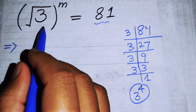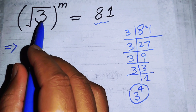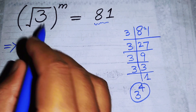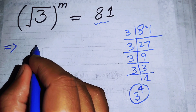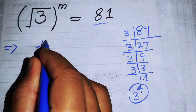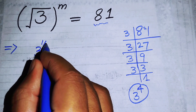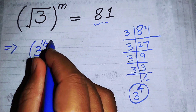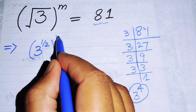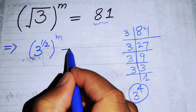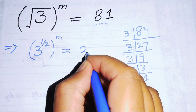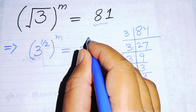On the left-hand side, we have the square root of 3, which we can write as 3 to the power of 1 over 2, and its whole power m is equal to 3 to the power of 4.